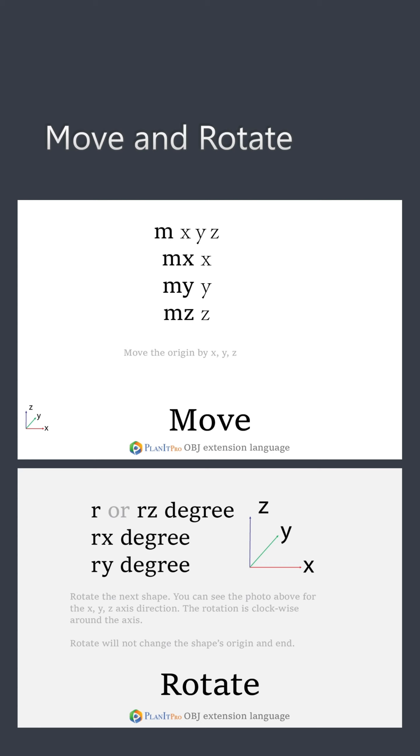Then we have the rotate command, which will rotate the next geometry by an angle. R is the same as rz, which will rotate the shape horizontally along the z axis. Rx and ry will rotate the shape along the x and y axes respectively. And rotations use the left-handed rotation rule, if you know what that means. Otherwise, just try to rotate a shape by some value to see its rotation direction.